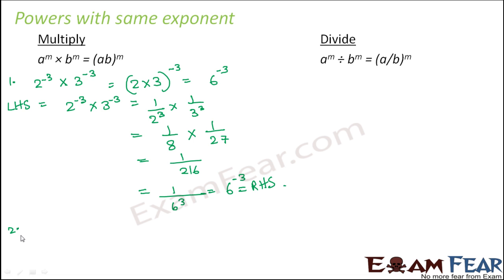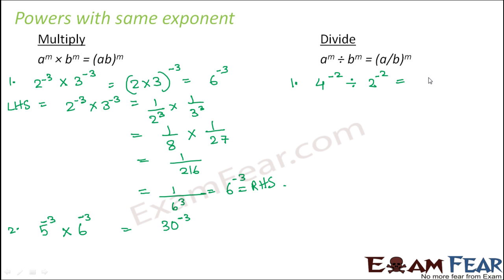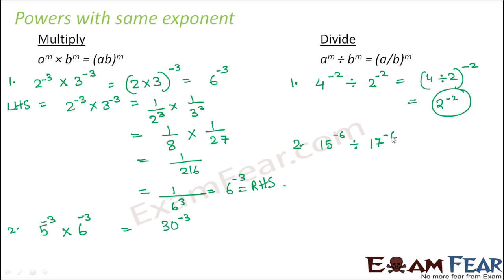One more multiplication example: 5 to the power minus 3 multiplied by 6 to the power minus 3 equals 6 into 5 to the power minus 3, that is 30 to the power minus 3. For division: 4 to the power minus 2 divided by 2 to the power minus 2 equals 4 divided by 2 to the power minus 2, giving 2 to the power minus 2. Similarly, 15 to the power minus 6 divided by 17 to the power minus 6 equals 15 by 17 to the power minus 6.